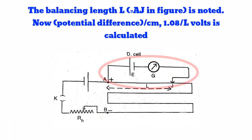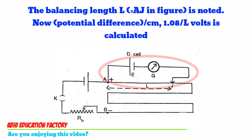The balancing length L, AJ in figure, is noted. Now potential difference per centimeter, 1.08 per L volts, is calculated.